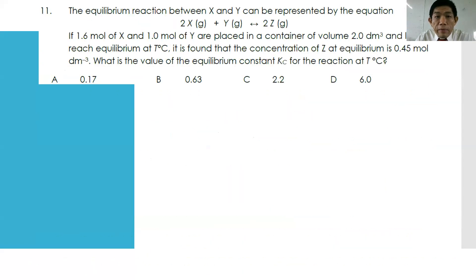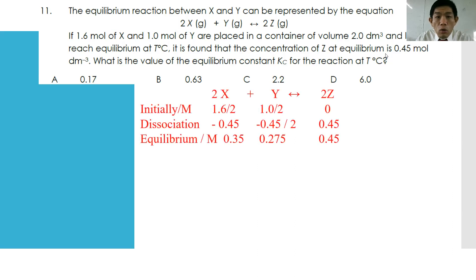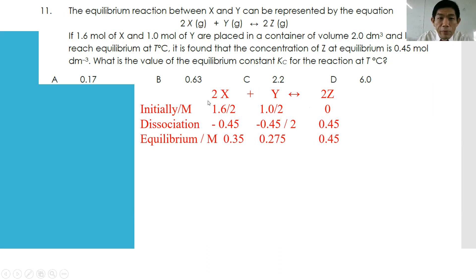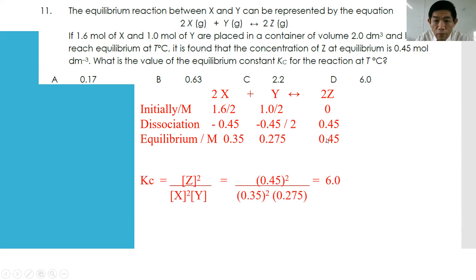Number eleven: for 2X + Y → 2Z, if 1.6 moles of X and 1.0 mole of Y are placed in a 2 dm³ vessel and reach equilibrium at T°C, and the equilibrium concentration of Z is 0.45 mol/dm³, what is Kc? Initial concentrations: X = 1.6/2 = 0.8, Y = 1.0/2 = 0.5, Z = 0. The change in Y = −0.45/2, and Z formed = 0.45. At equilibrium: X = 0.35, Y = 0.275, Z = 0.45. Kc = (0.45)² / ((0.35)² × 0.275) = 6.0.